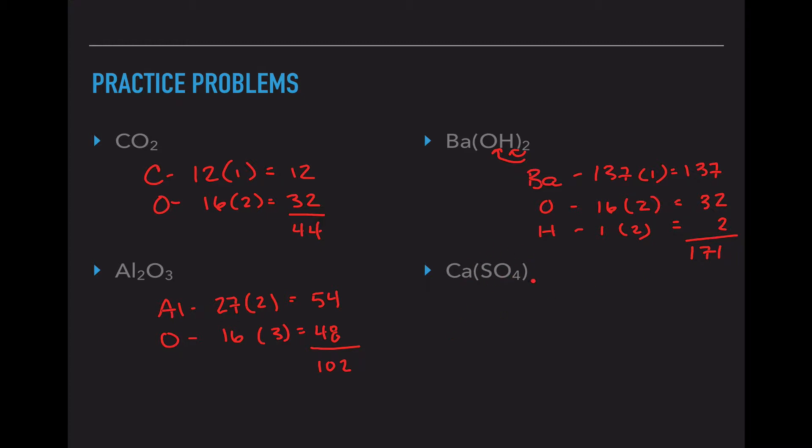Now this example with the parentheses, there is no number outside. Since there is no number outside, I'm going to leave everything inside alone. So calcium has an atomic mass of 40 and there's only one present. Sulfur has an atomic mass of 32 and there's only one present. And oxygen has an atomic mass of 16. There are four present. So 40, 32, and 64. And when I add all of these up, I have an atomic mass of 136 atomic mass units. Now if there was in fact a number out here, and I'm going to write that in green, hypothetically there was a 2. Then I would distribute that 2 and I would actually have 2 sulfurs and 8 oxygens. But since that's not out there, that isn't necessary.